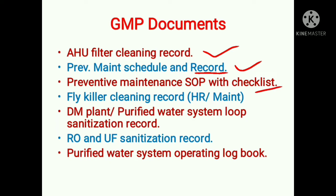Then fly catcher cleaning record — this document is either maintained by HR or maintenance department depending on the company. The next is DM plant or purified water system loop sanitation record, which is the most important document to be maintained by the maintenance department. Then RO and UF sanitation record, and purified water system operating logbook — this is the daily operating logbook.